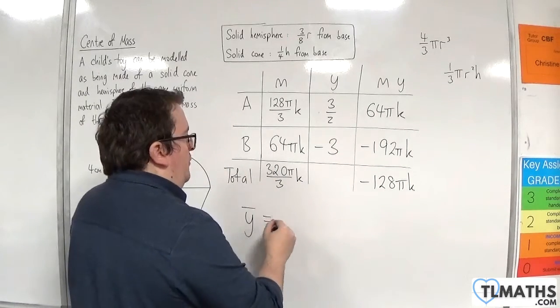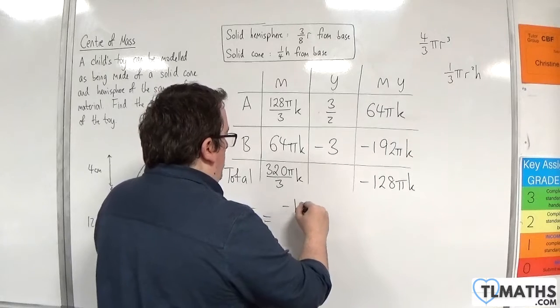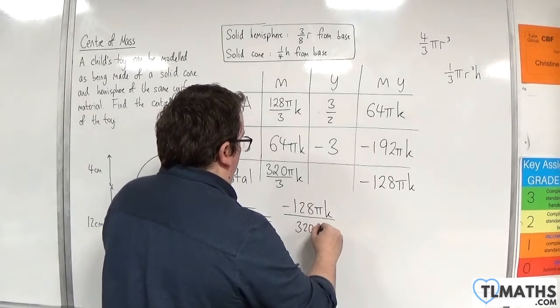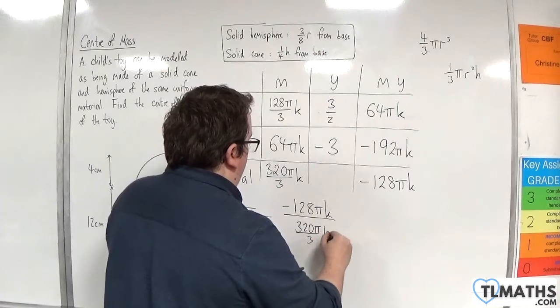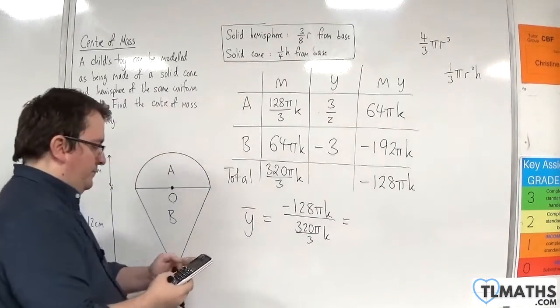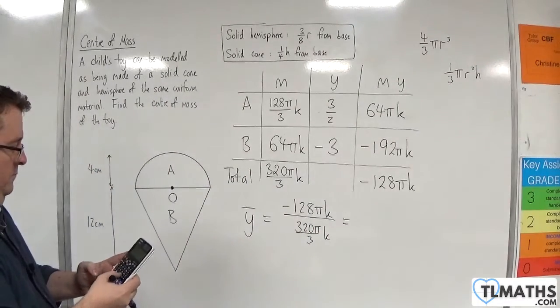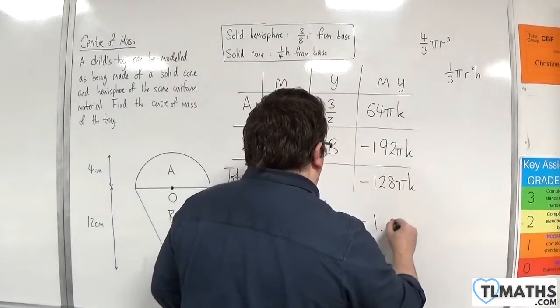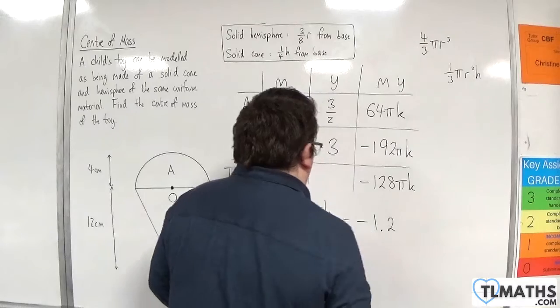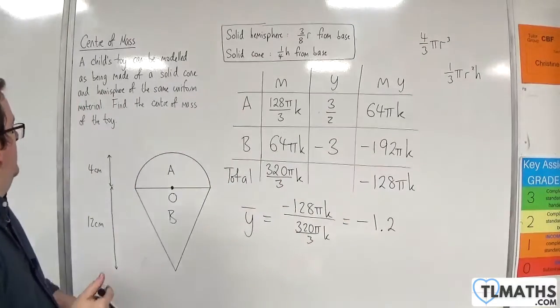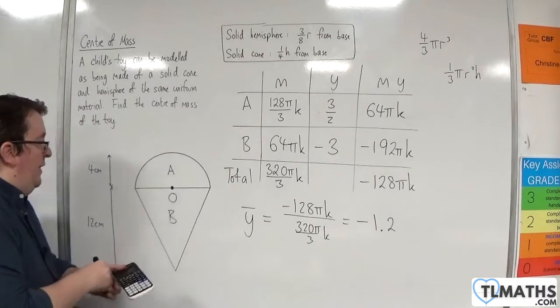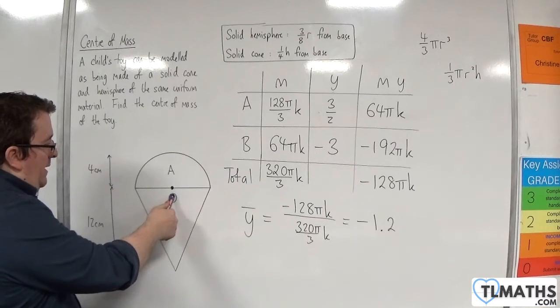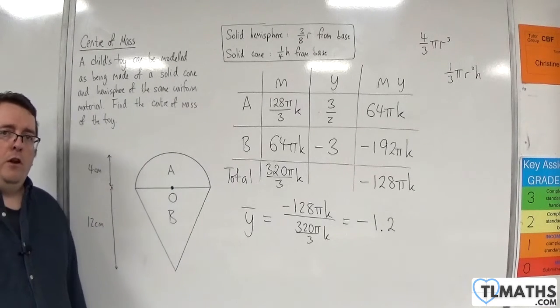So the average of the Y's, minus 128 pi K over 320 pi over 3 K. Which is minus 6 fifths, so minus 1.2, and that's centimeters. So that means our center of mass is 1.2 centimeters below the origin.